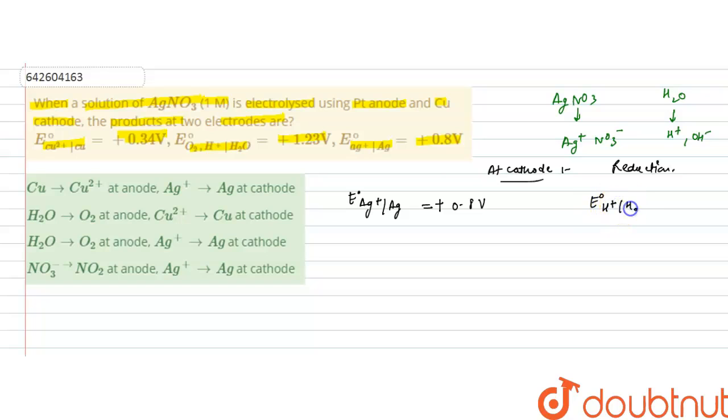It means Ag⁺ will be reduced. So Ag⁺ will be reduced to Ag. It means silver is obtained at the cathode. Now at anode...